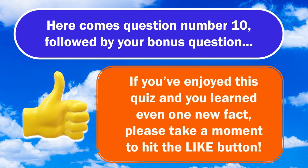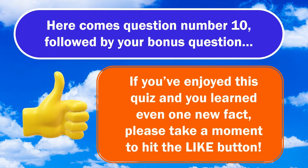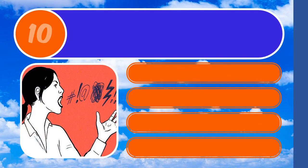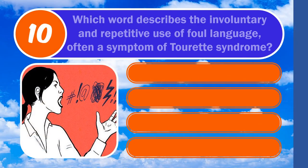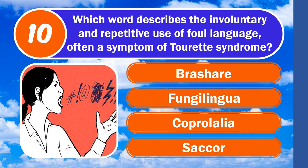Here comes question number 10, followed by your bonus question. If you've enjoyed this quiz and learned even one new fact, please take a moment to hit the like button. Question number 10: which word describes the involuntary and repetitive use of foul language, often a symptom of Tourette's syndrome? Is it Brushere, Fungilingua, Coprolalia, or Saccord?